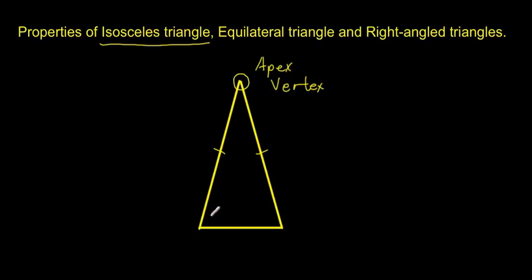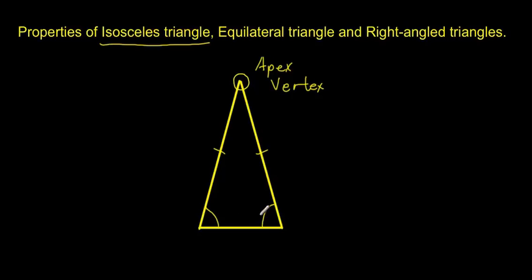Another property of an isosceles triangle is that the interior angles are the same. The angle on this side, which faces this angle here — these two angles are the same.